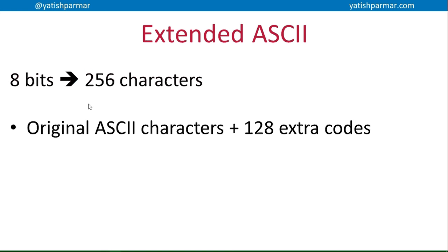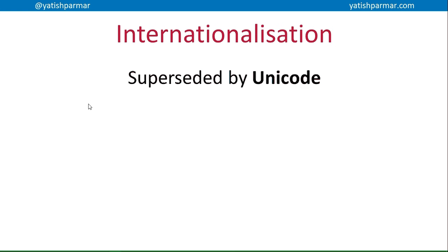You need more workable codes to actually do stuff with your computers. So they developed what we call extended ASCII — this time using the full eight bits, giving you 256 available characters. You've got the original ASCII characters plus 128 extra codes. There's no real single standard form of extended ASCII; the extra 128 character codes were modified based upon manufacturer requirements or any kind of localization.